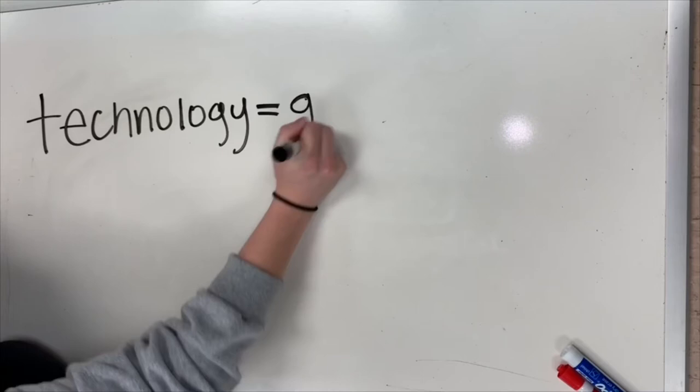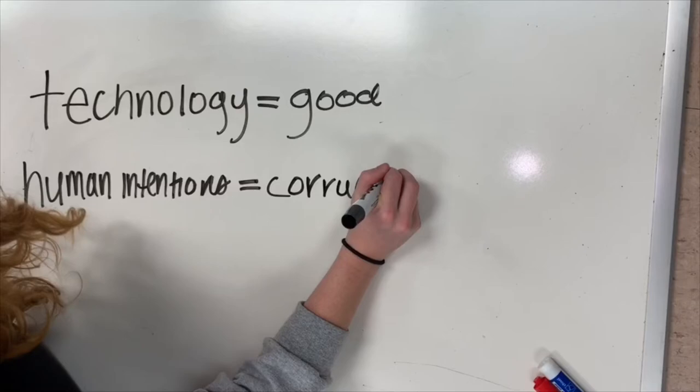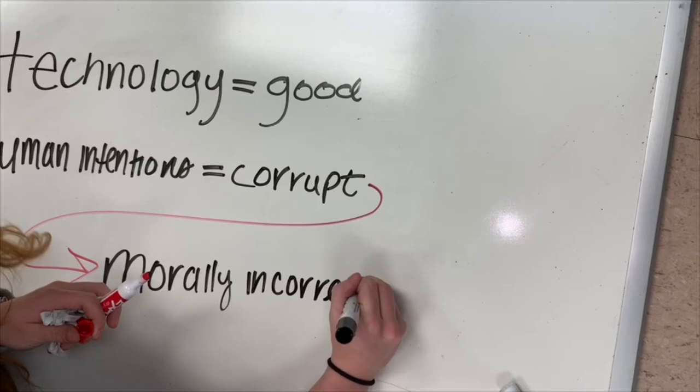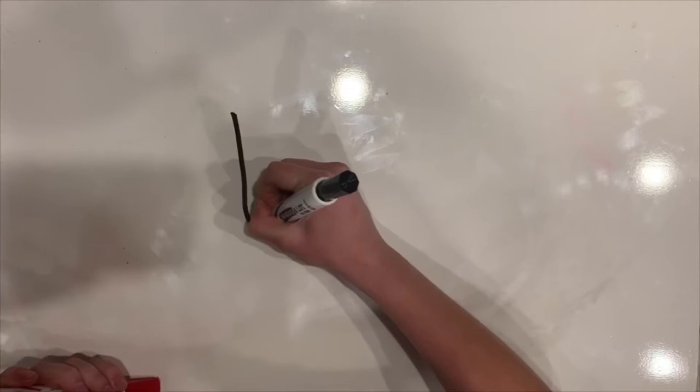This presents an ethical problem, because while creating life could be used for the good of mankind, Victor created life and then left it to be on its own. This in and of itself proves the belief that it is not the technology itself that is at fault, but rather the intentions behind the scientific exploration that created the destruction.